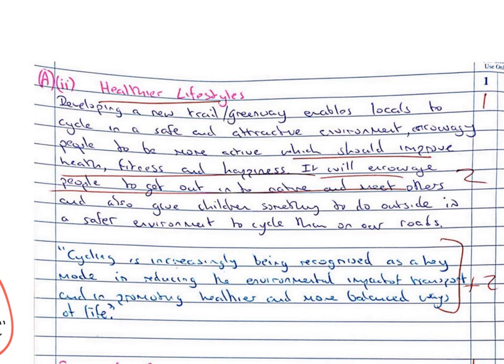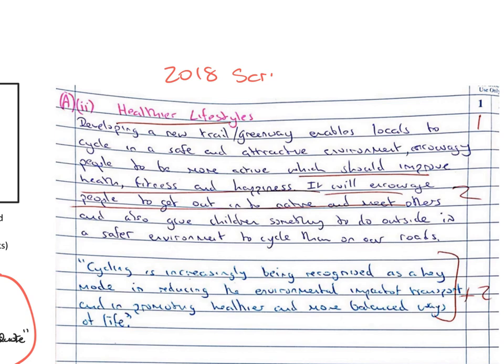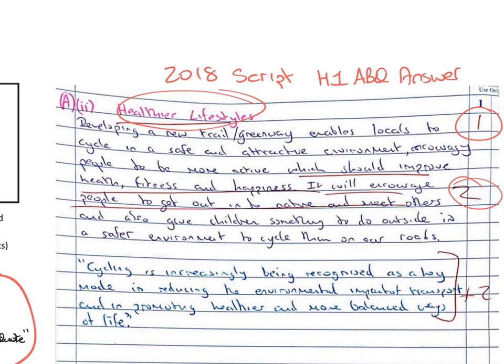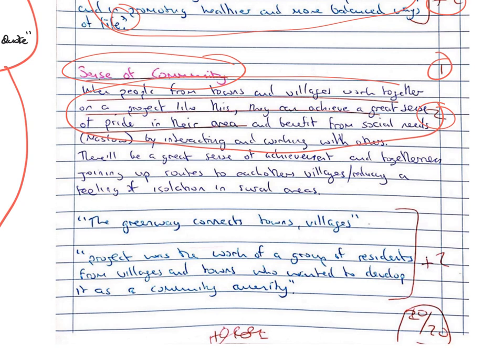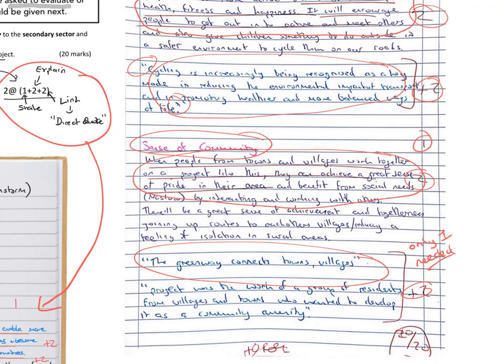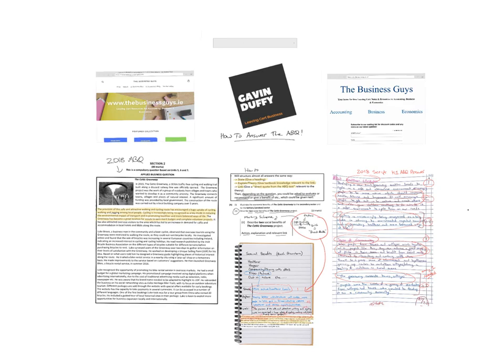Looking at the marking scheme again — one plus two plus two for state, explain, and link — 'more active, healthier locals' is good for one, the infrastructure explanation is good for two, and the direct quote in quotation marks is good for two as well. That's five out of five. This is my actual script from when I went back and sat the Leaving Cert in 2018. I got 80 out of 80 and you can see the red underlines where I got the marks. My second point was sense of community — talking about ten villages coming together on a project and a sense of pride — which got me the marks. I actually gave two direct quotes when you only need one, so I fell into the trap of writing too much.